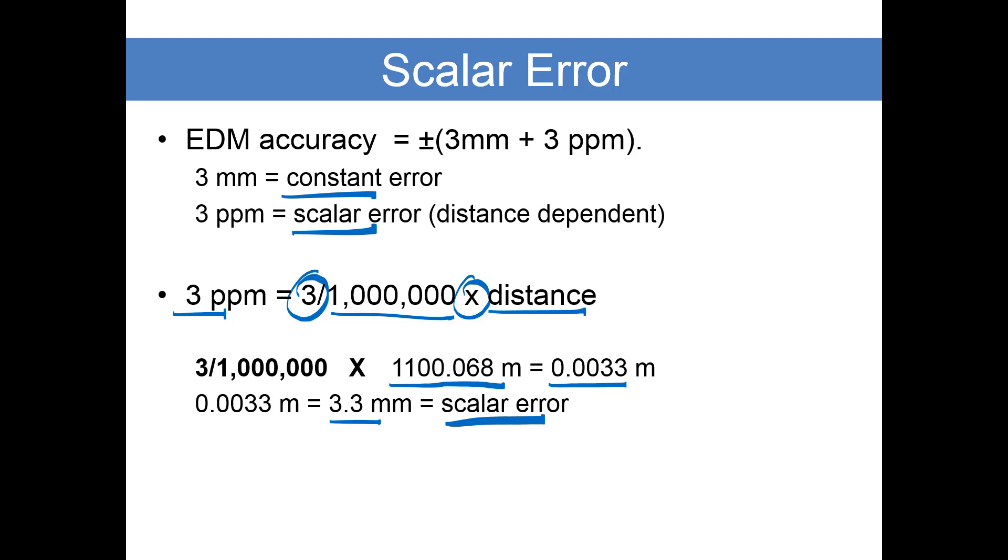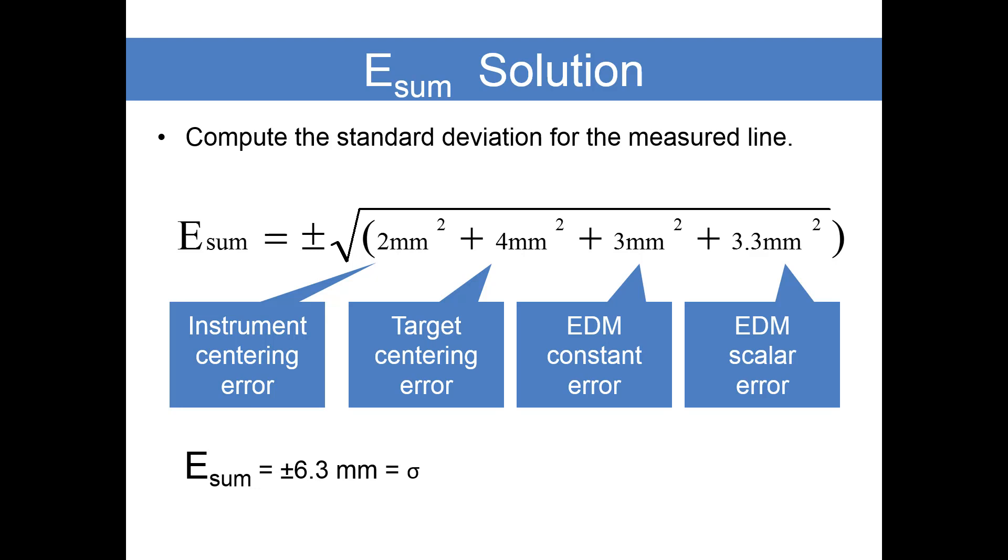The scalar error is going to be one of four inputs that we put into our error of a sum. We have the instrument centering error, the target centering error of 4 millimeters, our EDM constant error of 3 millimeters, and our scalar error of 3.3 millimeters. We square each of these errors and take the square root of the sum of the squares. Our result is plus or minus 6.3 millimeters.